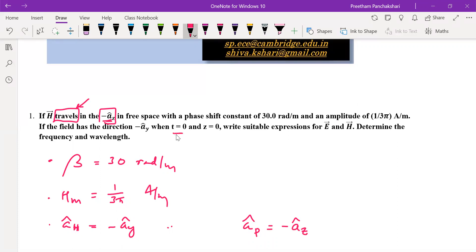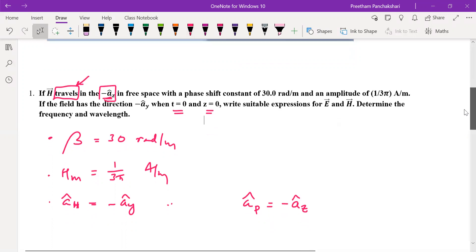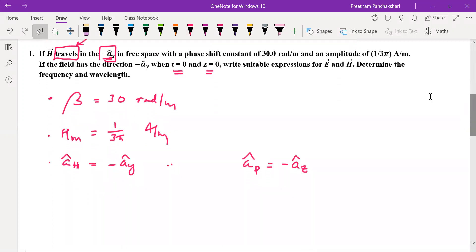At t equal to 0, z equal to 0, that means at the beginning, at the very first instant of time and space. Write suitable expressions for E and H, determine the frequency and wavelength. We can easily write the equations for E and H in terms of these values.